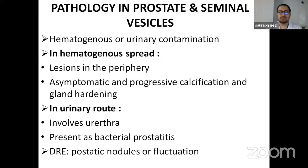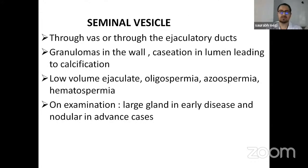Pathology in the prostate and seminal vesicles: involvement can be hematogenous or via urinary contamination. In hematogenous spread, the lesions are generally in the periphery, asymptomatic, with progressive calcification of the gland. In the urinary route, it involves the urethra and can present as bacterial prostatitis; on DRE, there may be prostatitis, induration, or fluctuation. In case of seminal vesicle involvement through the vas or ejaculatory tract, there may be granulomas in the wall and caseation in the lumen leading to calcification. Patient may present with low volume ejaculate, oligospermia, azoospermia, and hematospermia.